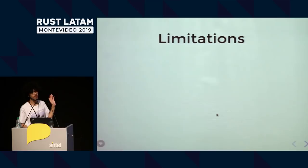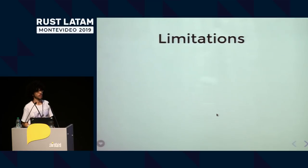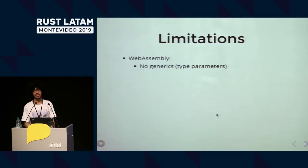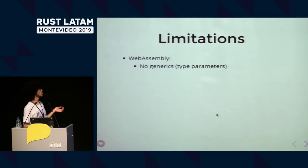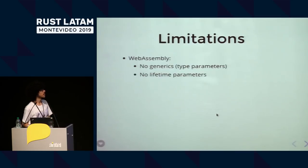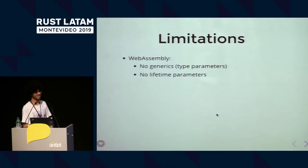Some limitations of doing interop with Rust and interop in general. For WebAssembly, at least using the WasmBindgen project — which is very big and most used — you can't use generics or type parameters yet. You can use them internally, but you can't export any type that uses them. Also, there are no lifetime parameters, so goodbye references.